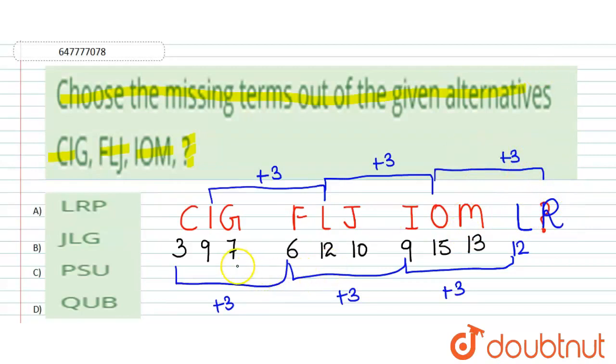Then next part में check करते हैं। In next part, 7 plus 3 is 10, and 10 plus 3 is 13, then 13 plus 3 will be 16. And 16 is for P, 16 is for P.